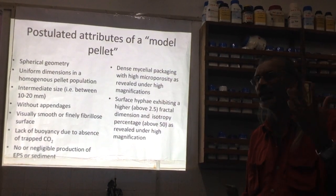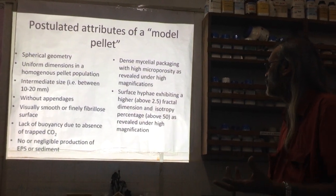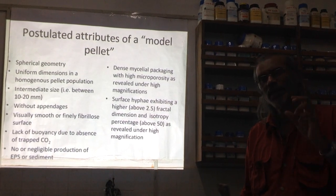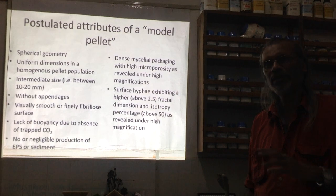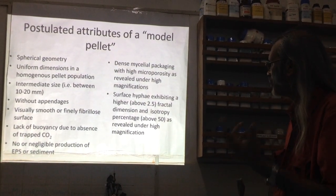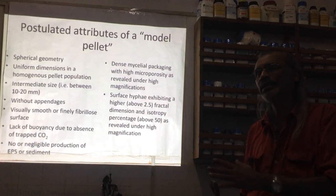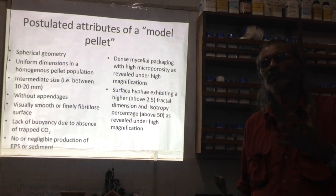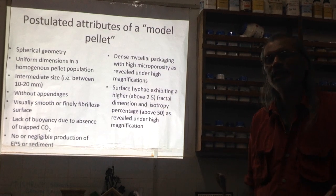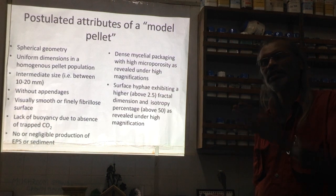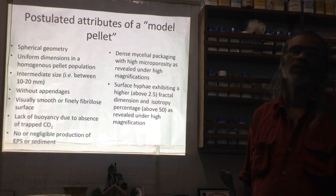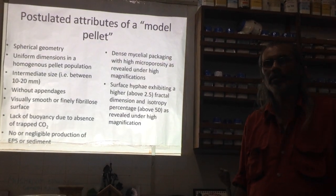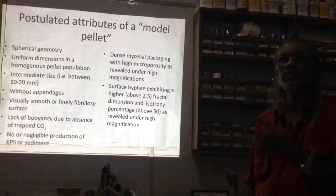Dense mycelial packaging with high micro-porosity revealed under high magnification is a useful feature to define a model pellet, as micro-porosity reflects the architecture in terms of gaps ideally placed inside the entire pellet structure. Surface fractal dimension — as it increases, complexity of the design increases. Isotropy: a pellet surface 50% isotropic means 50% of the topography is identical in certain directions; values of 60, 70, 80 would give a truly isotropic fungal pellet. The combination of fractal dimension and isotropy provides a very good parameter at the microscopic level to mark a pellet as a model pellet.